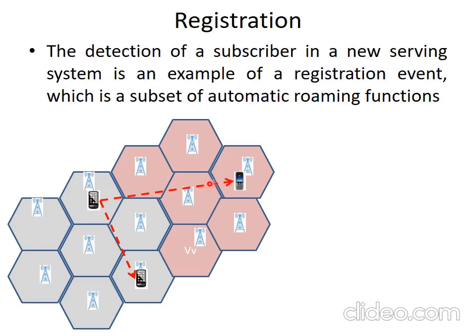The registration functions need to be performed before the network can provide a service to the subscriber. As the mobile station moves from one location area to another, the new location area must register the mobile station before providing service. Emergency services like 911 and 999 are exemptions. These emergency service numbers vary from country to country. Mobile registration is a subset of the automatic roaming function, which consists of mobile station service and mobile location management.